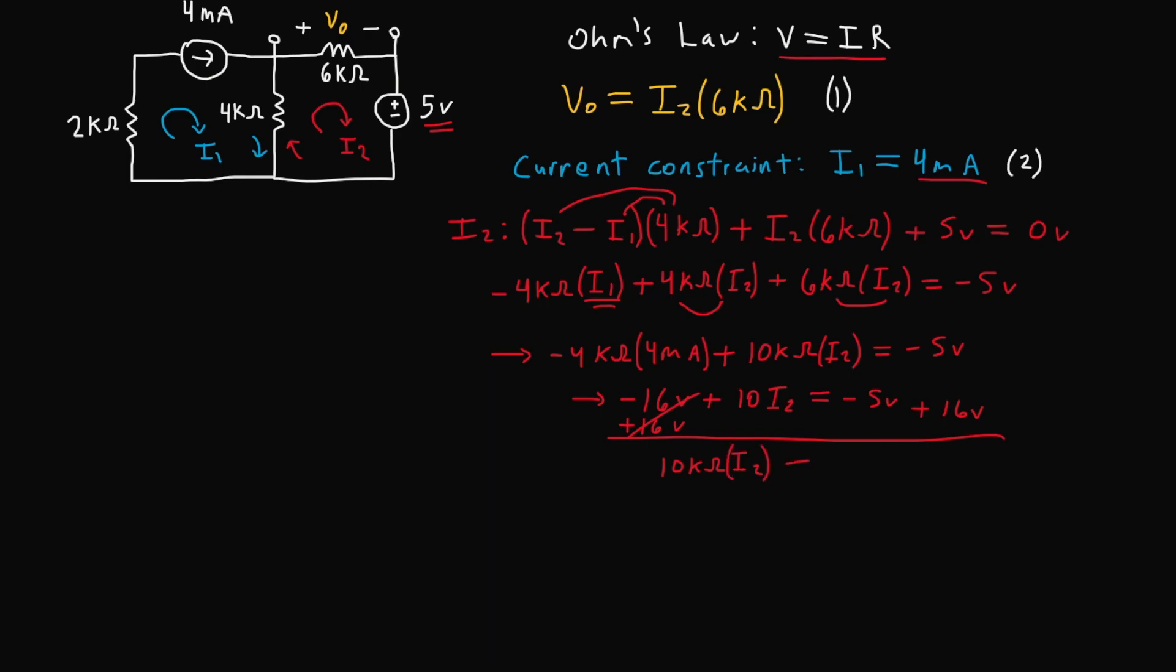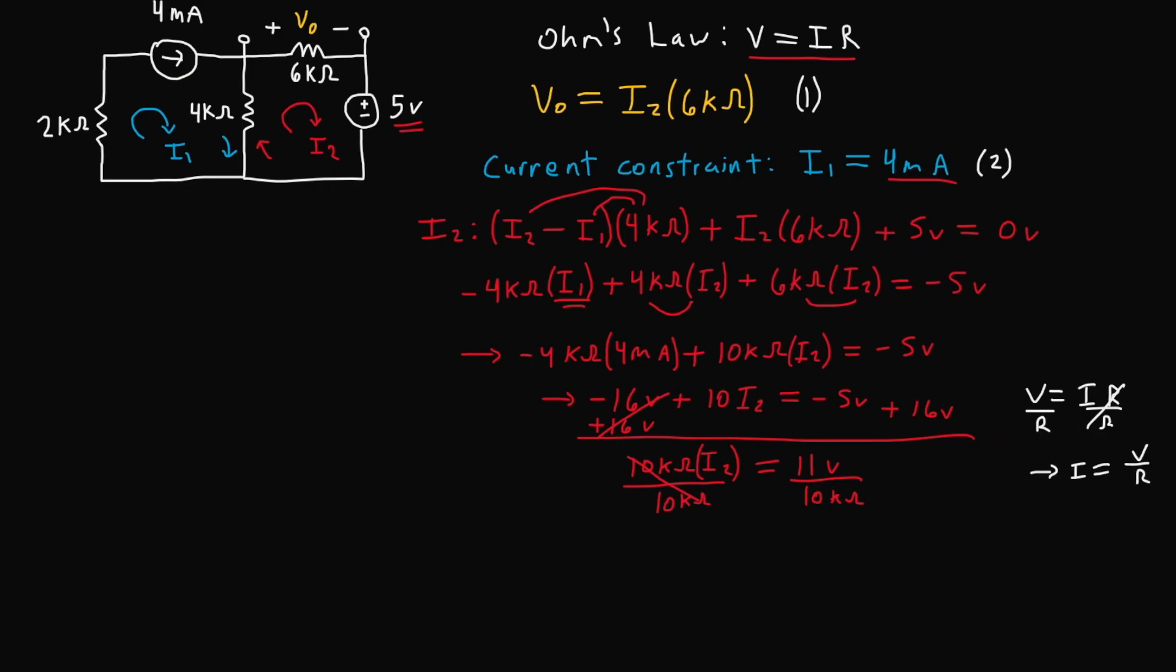That leaves us with 10 kilo ohms times I₂ equals positive 11, then divide the 10 kilo ohms. Here we have 11 volts divided by 10 kilo ohms. Volts divided by resistance equals current, so that will leave us with units of current, which is what we expect for I₂. That is 1.1 milliamps. So I₂ is equal to 1.1 milliamps.